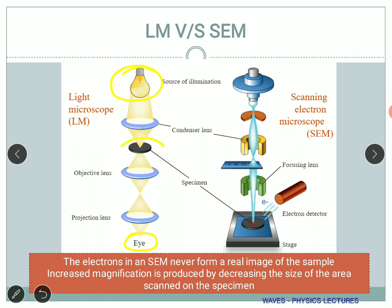In a light microscope, the specimen is kept somewhere in the middle. In a scanning electron microscope, the sample is kept at the bottom where the electrons are incident. The backscattered electrons and other electrons produced are detected by a detector, and then studied after connecting to an electronic system to get an image. In a light microscope, your eye is the detector, whereas here electron detectors are working.